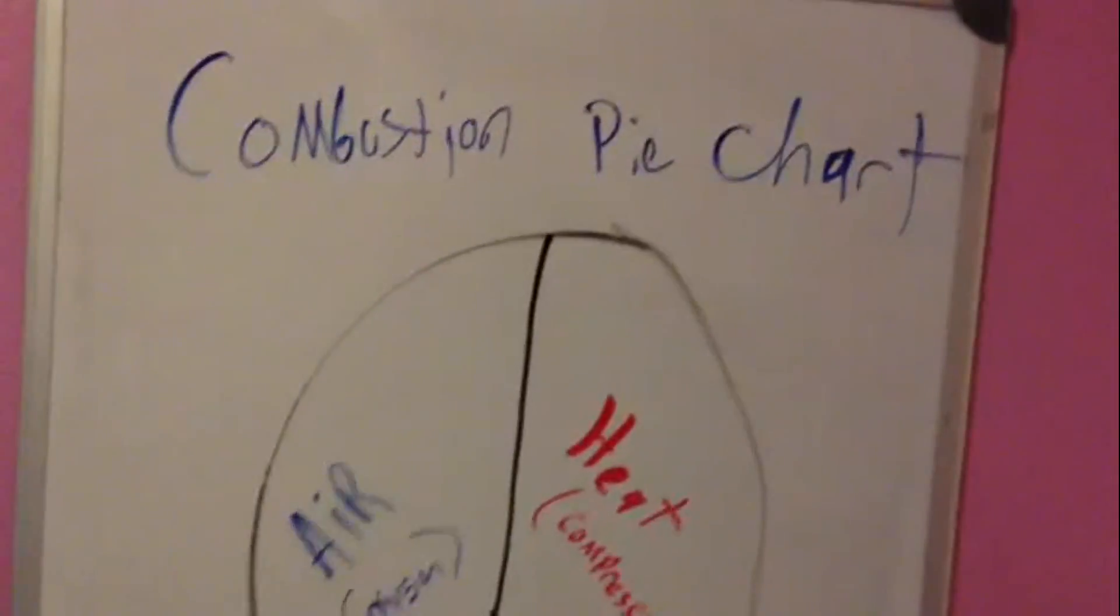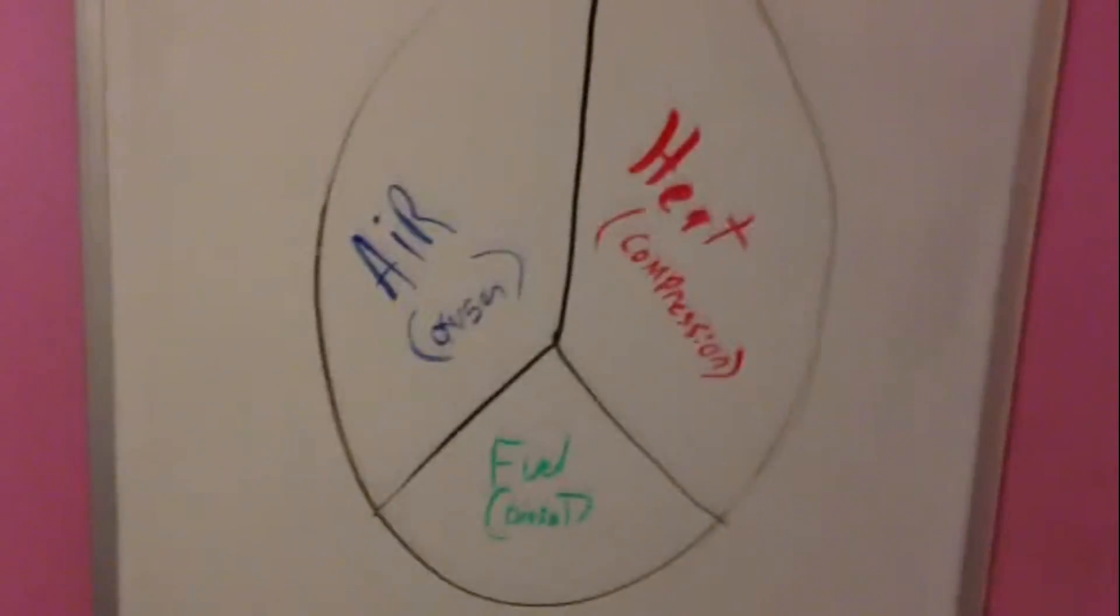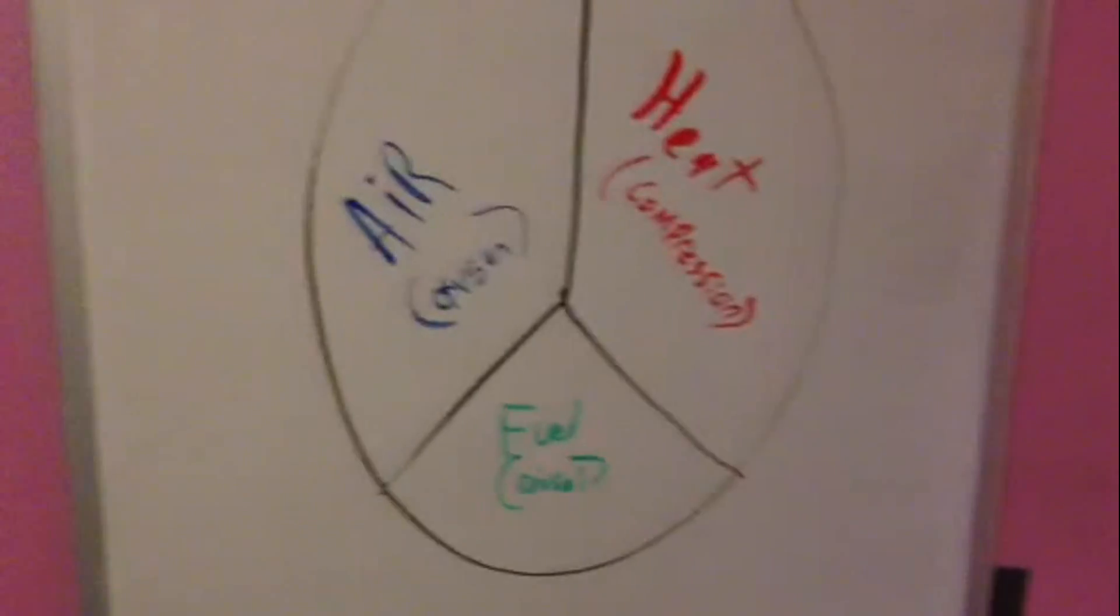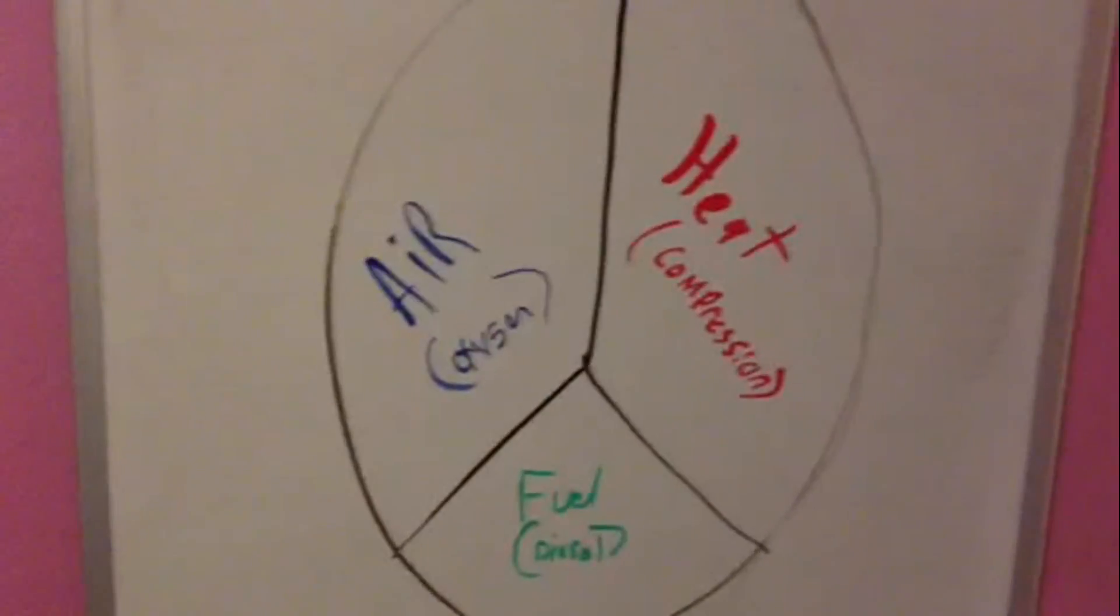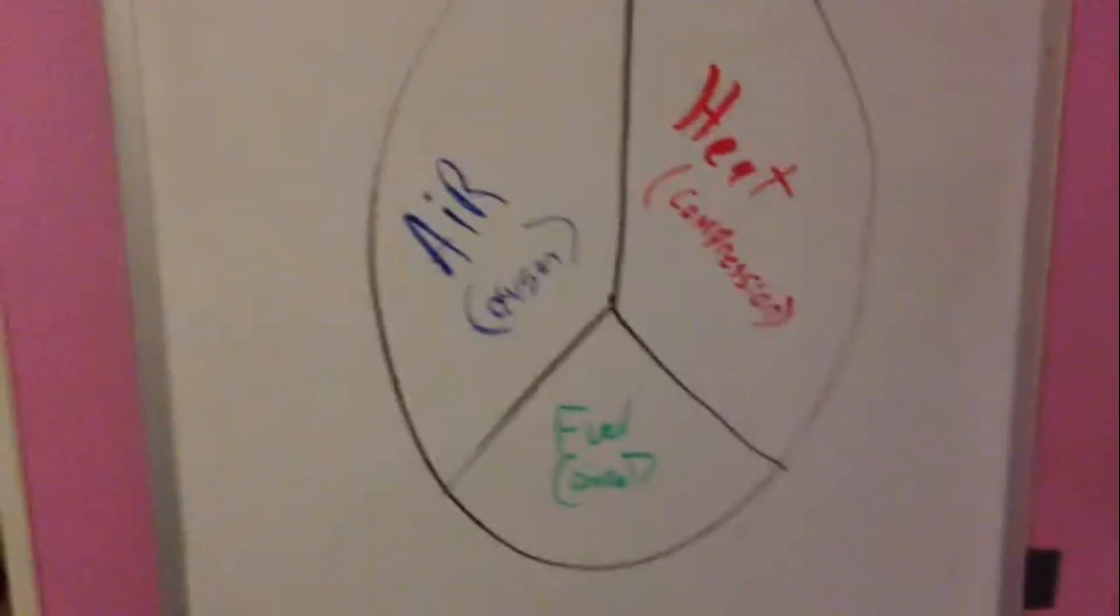Okay, so to begin this we're going to have to start here at the beginning. What I have is the combustion pie chart. And yes I know my writing isn't very good. But in the pie chart we have air in the form of oxygen, heat in the form of compression, and then fuel in the form of diesel. Without any one of these three components we do not have combustion in our diesel engines.